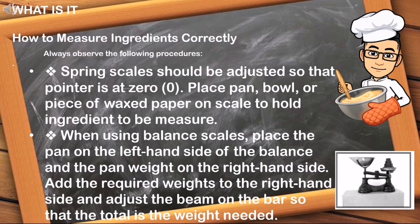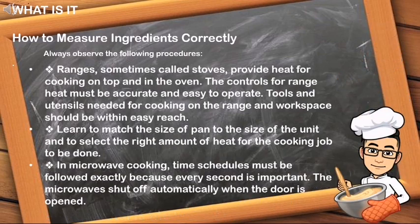When using balance scales, place the pan on the left-hand side of the balance and the pan weight on the right-hand side. Add the required weights to the right-hand side and adjust the beam on the bar so that the total is the weight needed. Ranges, sometimes called stoves, provide heat for cooking on top and in the oven.